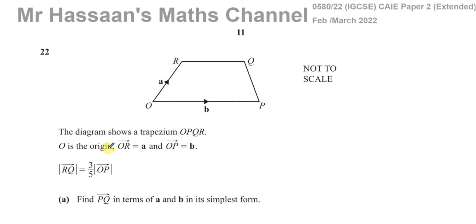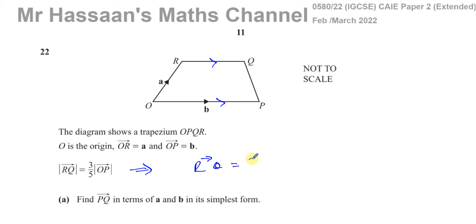The question says the diagram shows the trapezium OPQR. O is the origin, OR is vector a, OP is vector b. RQ and OP are the parallel sides. The magnitude of RQ is equal to three-fifths of the magnitude of OP. Because these sides are parallel, we can actually say that not only is the magnitude of RQ three-fifths of OP — the vector RQ is three-fifths the vector OP. Parallel vectors can be expressed in terms of each other.